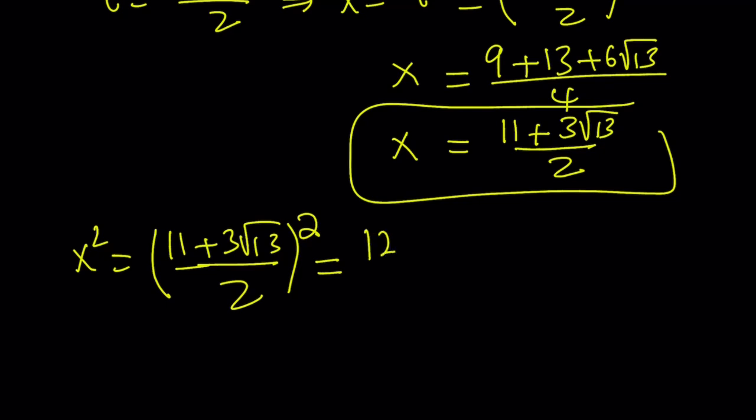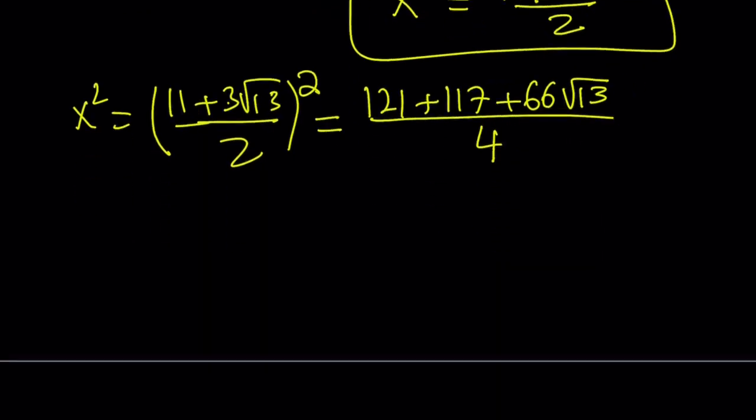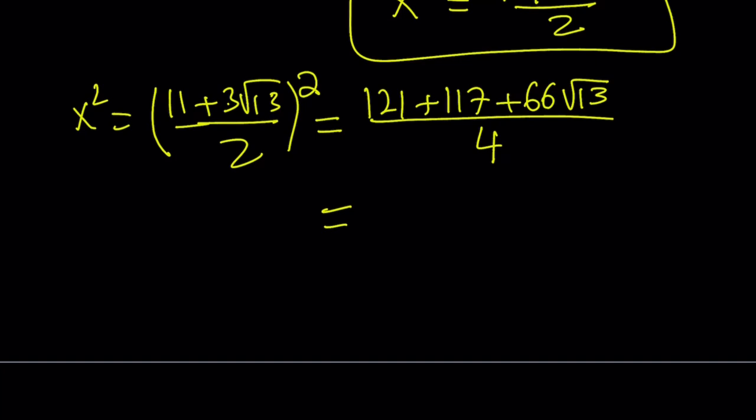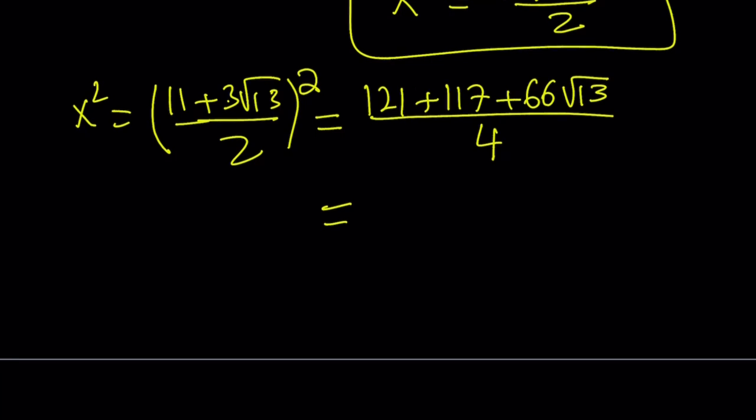So now from here, you're going to get the following. 11 squared is 121, 9 times 13 is 117. And then their product is just going to be 3 times 11 times square root 13 times 2. That is going to give us 66 root 13. And we're going to add it all together, divide by 4. Obviously, one more time we can simplify this, but let me show my work first.